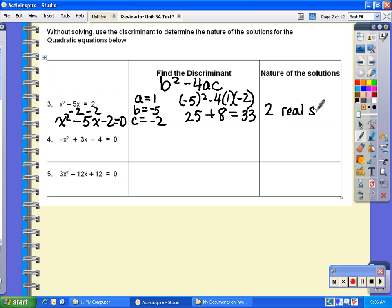For the next one, I have it already equal to zero, so I can go straight to plugging in: a = -1, b = 3, and c = -4. Plugging it into the discriminant, I have 3² - 4 times a times c. 3² is 9, three negatives here so it's going to remain minus, 4 times 4 is 16.